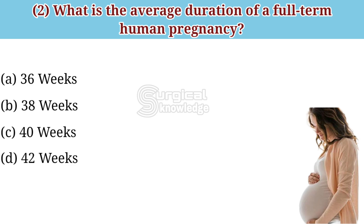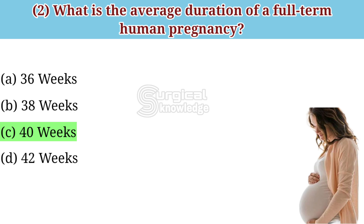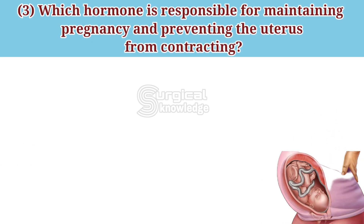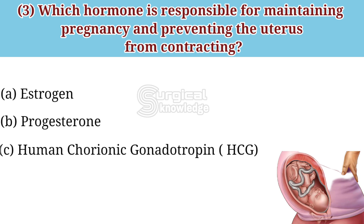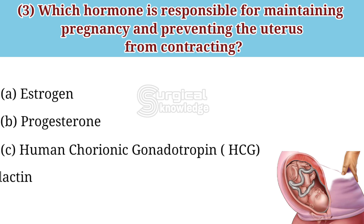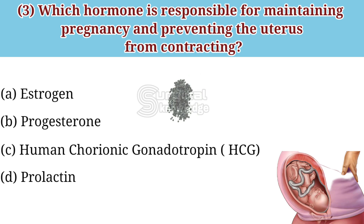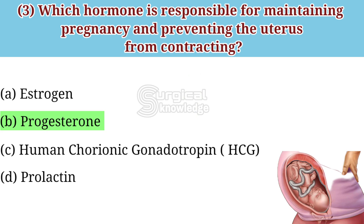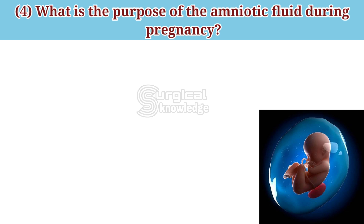The correct answer is 40 weeks. Which hormone is responsible for maintaining pregnancy and preventing the uterus from contraction? Options: estrogen, progesterone, human chorionic gonadotropin, prolactin. The correct answer is progesterone.